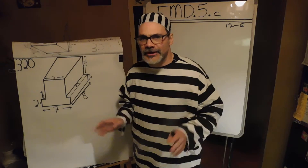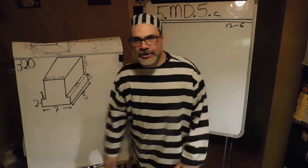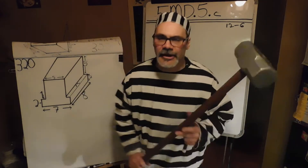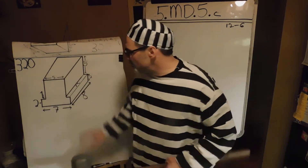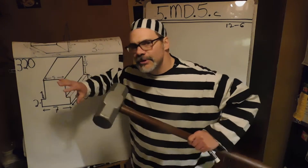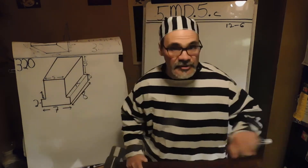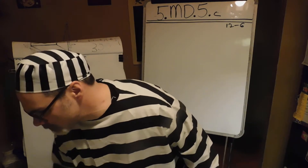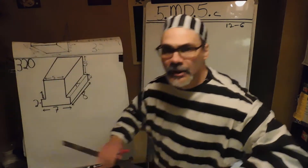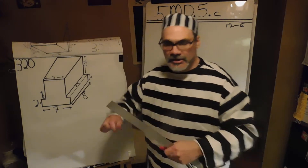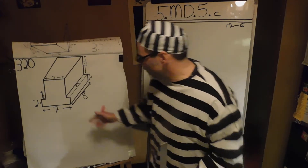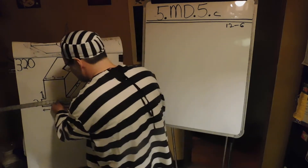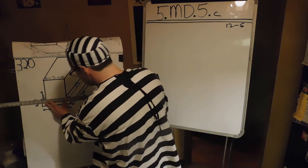So you're being asked to find the volume of an irregular shape. What you need to do is think of this as two separate prisms. There's usually more than one way to do this, but what I'm going to do is take a red marker and fill in this imaginary line right along here. You'll see it here in a moment.